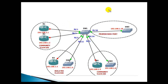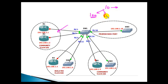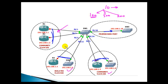VLAN 10 will be the primary VLAN. Within it, I'm creating secondary VLAN 100 as a community VLAN — those hosts communicate only within VLAN 100. VLAN 500 will be the isolated VLAN. VLAN 200 will be another community VLAN. Community VLANs 100 and 200 can talk within themselves; isolated VLAN 500 hosts are totally isolated and will not talk to any other site except the promiscuous port.